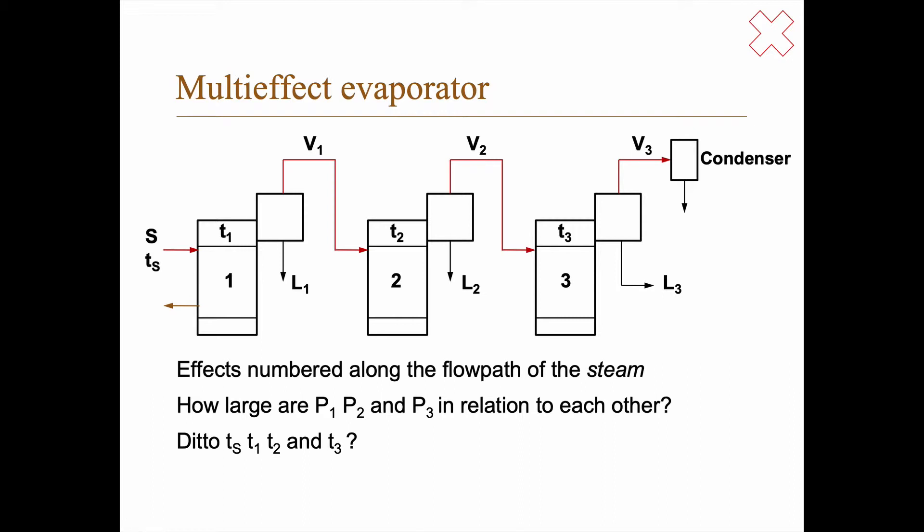Now, how large will the pressures be here? P1, P2, and P3. The pressure on this side, the feed side of this evaporator, P2, the pressure on the feed side in the evaporator 2, and P3 being the pressure in the feed side of the evaporator 3.